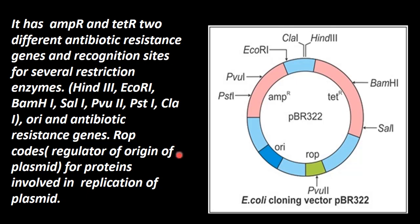In summary, PBR322 has many restriction enzyme sites including SalI, BamHI, HindIII, ClaI, EcoRI, PvuI, and PstI. Plus, it has ampicillin resistance and tetracycline resistance genes. That is why the antibiotic marker is used.